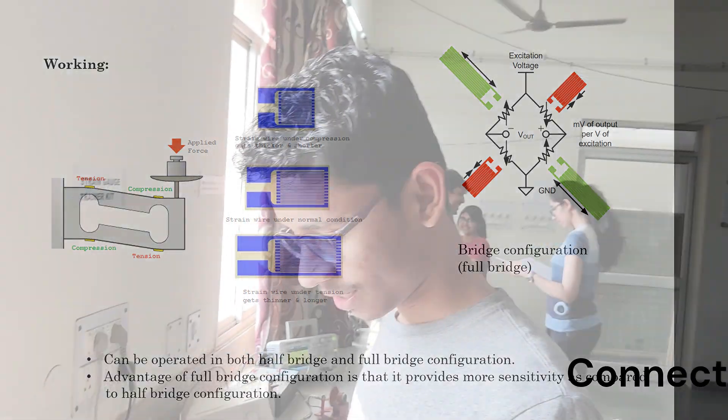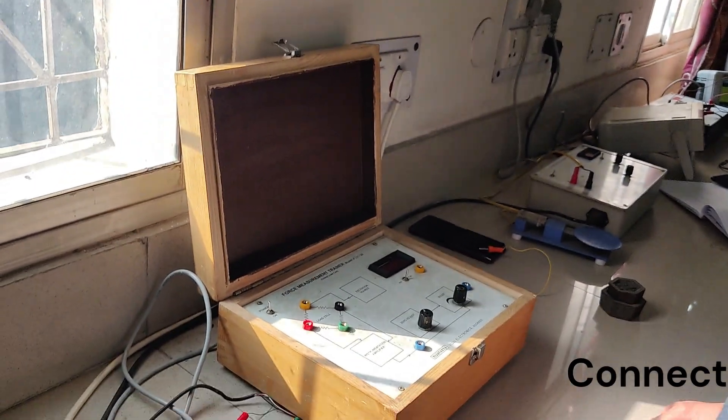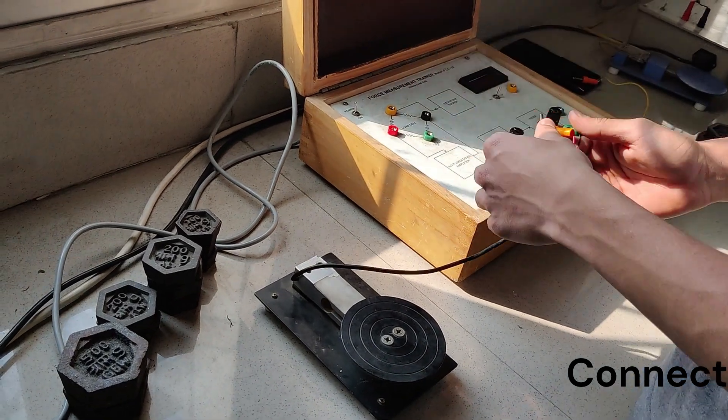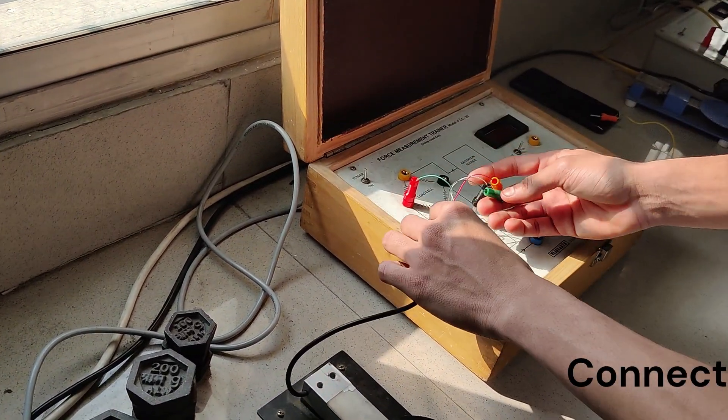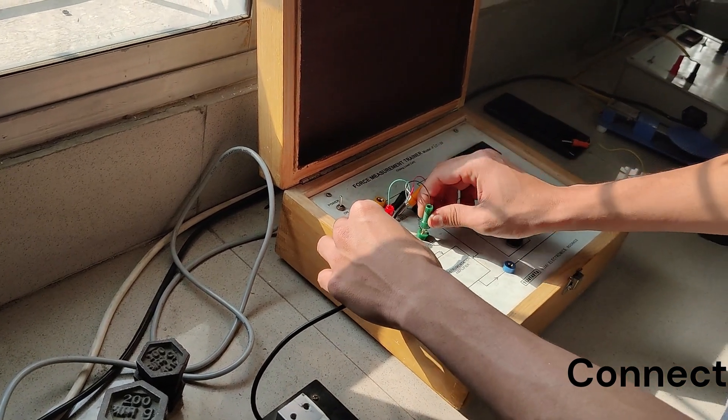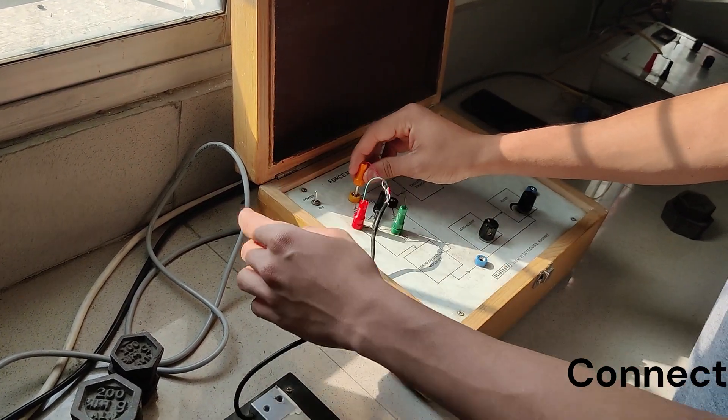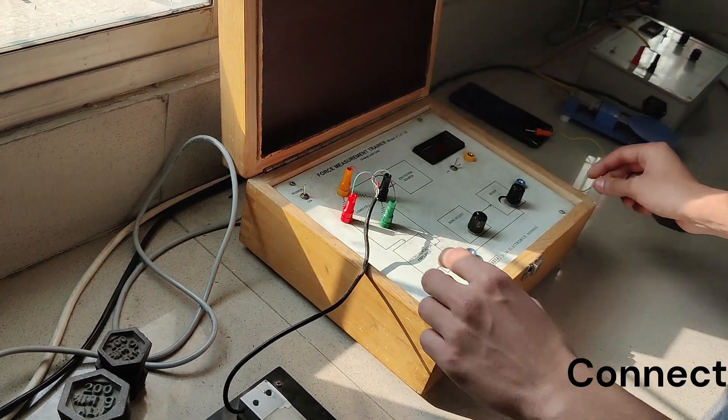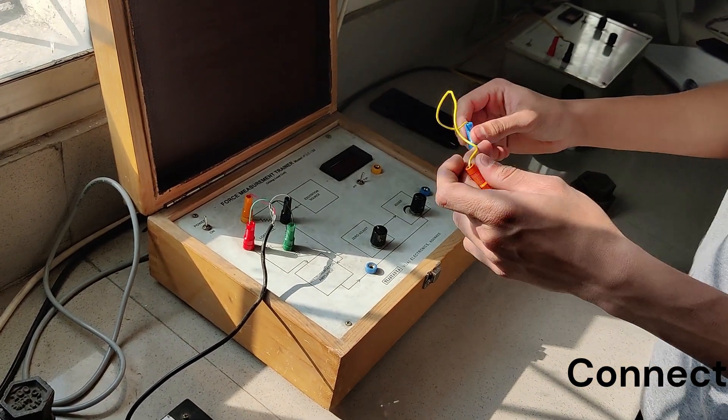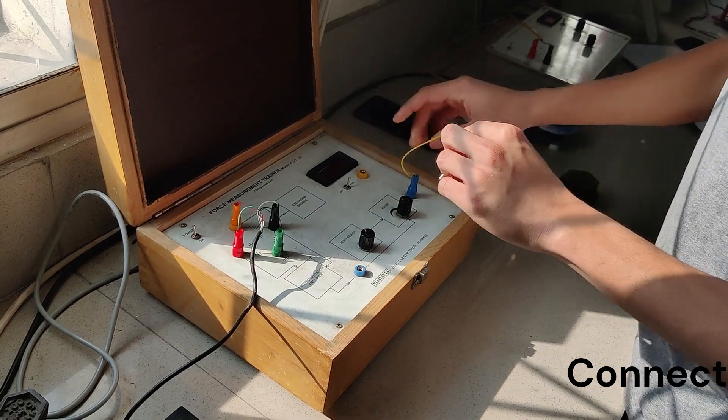We will now see how to perform the experiment. The first step is to make all the connections properly. The connections coming out from the load cell are connected in the following fashion. We also have to connect the jumper connection so that the readings can be displayed.